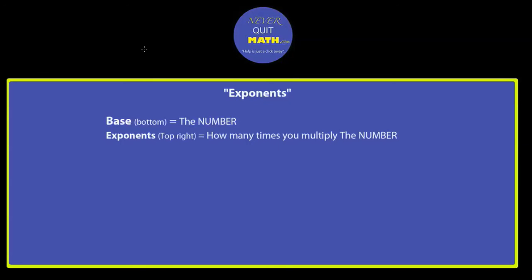What's going on y'all, right now we're about to tackle the topic of exponents. Whenever you have an exponent, you always have two things: a base and the actual exponent. The base is always the number, and the exponent represents how many times you're going to multiply that number. Let's do an example.